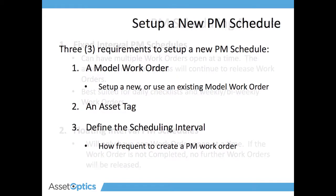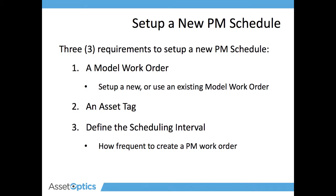There are only three required data elements that you need to set up a new PM schedule: a model work order, an asset, and how frequently you want the work order to be generated. We're going to set up a new one — we're going to add a weekly checklist for a boiler. We've already created a model work order with the appropriate work instructions and we already have the boiler asset in the system. We're going to set up the new PM schedule to release the work order every seven days and be due on Friday.